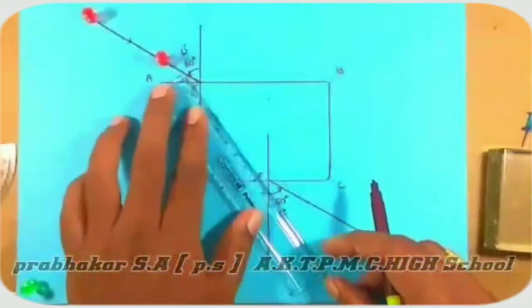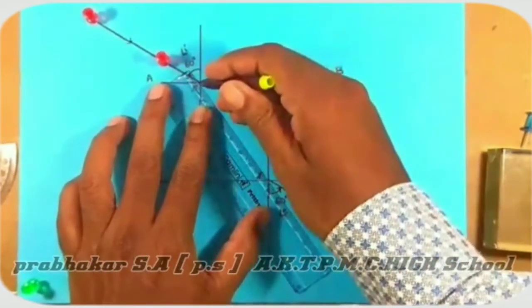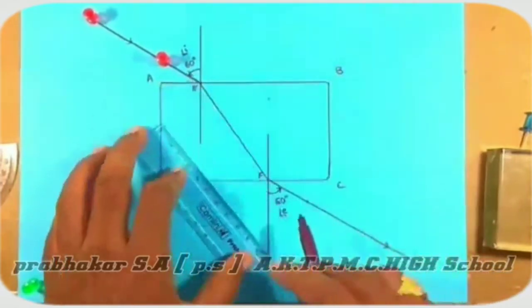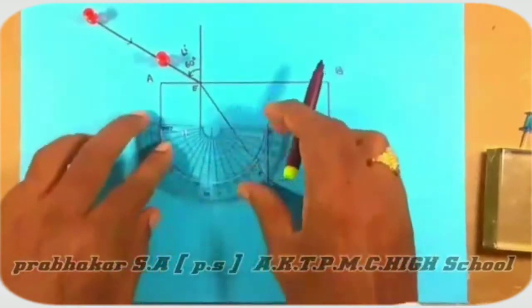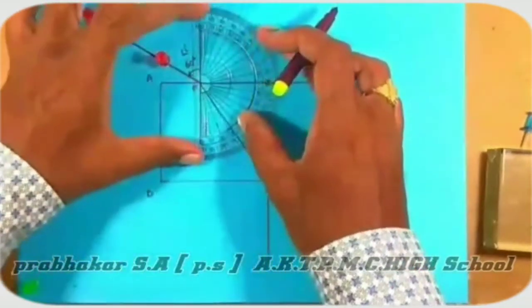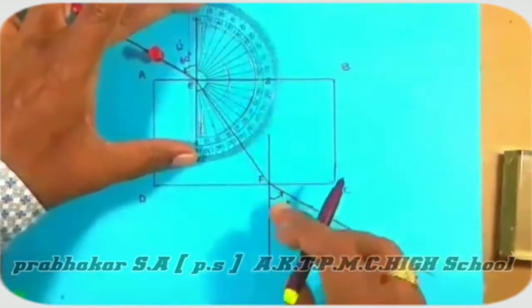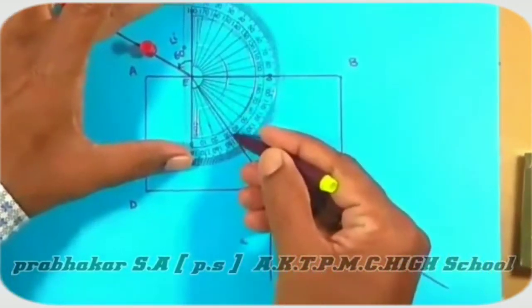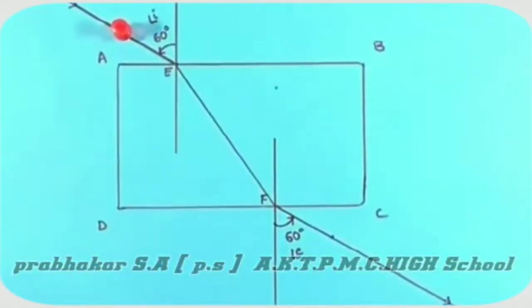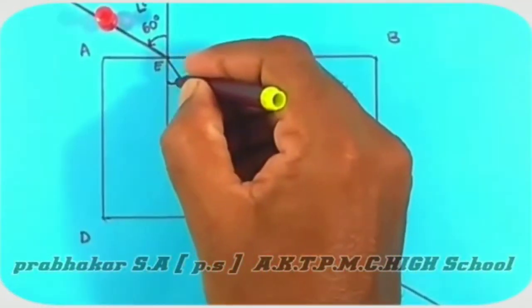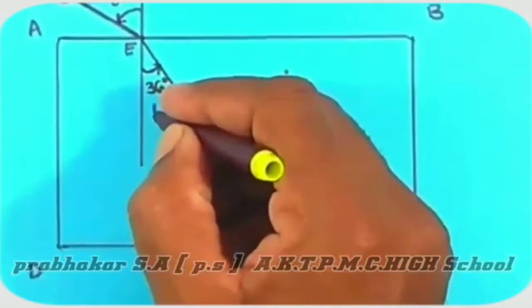Now, join E and F. EF represents the refracted ray. Now we measure the angle of refraction — that is, the angle which the refracted ray makes with the normal. That is 36 degrees here. That is called the angle of refraction.